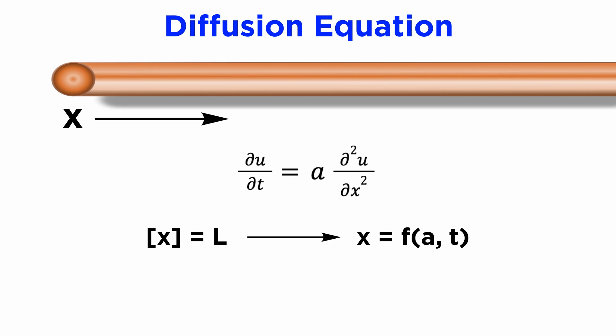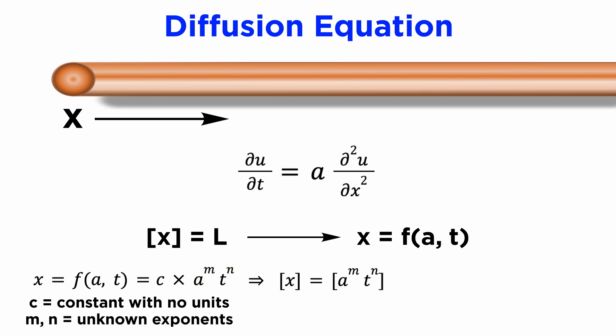Once again, the dimensions of this equation must be equal. If we assume that f is a power law function equal to some unitless constant c times A to the m times t to the n, where m and n are exponents, then we can use algebra again to find what m and n must be.